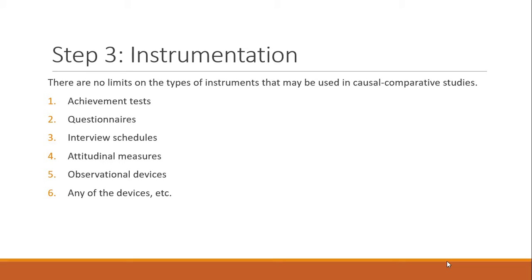Now let's talk about step number three, which is about instrumentation. For instrumentation, there is no limit on the types of instruments that may be used in the causal comparative study. The researcher can of course select instruments that are reliable or allow him or her to draw valid conclusions.